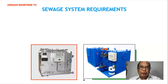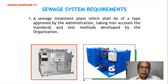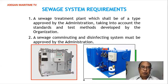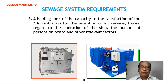Sewage system requirements. Number one: a sewage treatment plant, which shall be of a type approved by the administration, taking into account the standards and test methods developed by the organization — that is, the IMO. Number two: a sewage comminuting and disinfecting system must be approved by the administration. Number three: a holding tank of sufficient capacity to the satisfaction of the administration for the retention of all sewage, having regard to the operation of the ship, the number of persons on board, and other relevant factors.